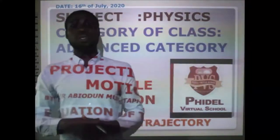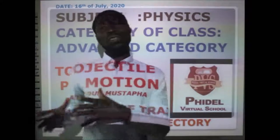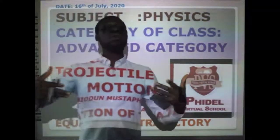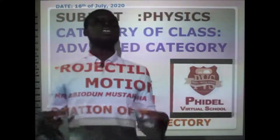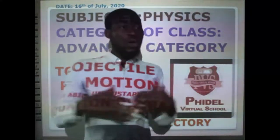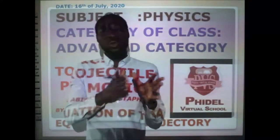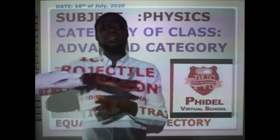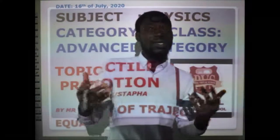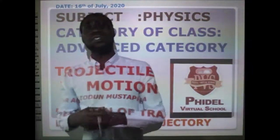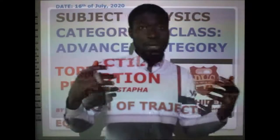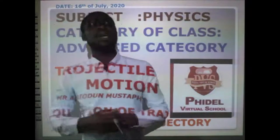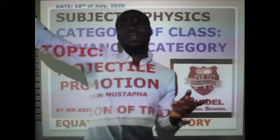Projectile motion consists of two independent motions: the constant horizontal motion along the x-plane, and the vertical motion of free fall due to gravity. The horizontal motion consists of the horizontal range and the maximum range. The vertical motion consists of the time taken to reach maximum height, the maximum height reached, the time of flight, and the vertical velocity. The constant horizontal motion also consists of the horizontal velocity.